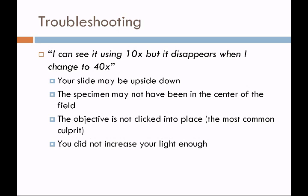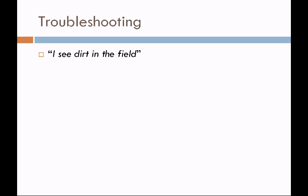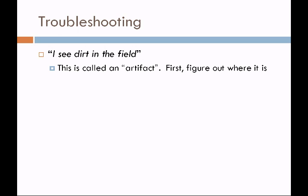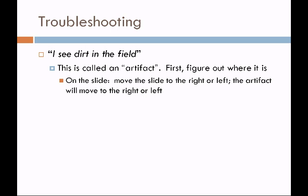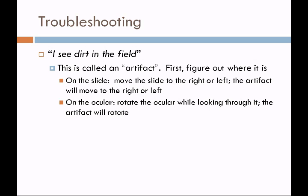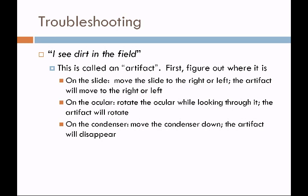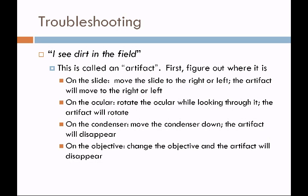If you don't increase your light, you're going to have difficulty with resolution. Another problem: I see dirt in the field, or I don't know if this is dirt or a microorganism. If it is dirt — we call these artifacts — you have to decide where the artifact is. If it's on the slide, move the slide and the artifact will move with it. If the dirt is on the ocular, rotate the ocular and if the dirt spins around, it's on the ocular — clean it with lens paper. The dirt might be on the condenser: move the condenser down and if the artifact disappears, that's where it was. If changing the objective makes the artifact disappear, it was on the objective.